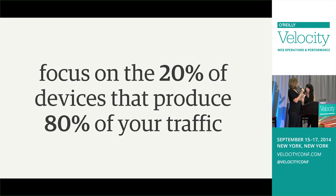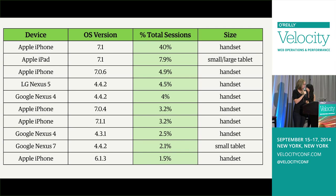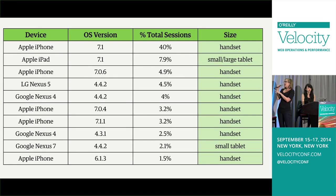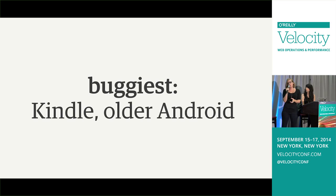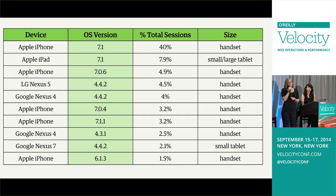We really want to focus on the 20% of devices that produce the 80% of your traffic. The top 10 devices listed here make up 74% of total visits to my site — a great starting list. Next, cover your visitors' screen sizes and operating systems. This is also an opportunity to identify particularly buggy devices — Kindles can be problematic, as can really old versions of Android. In my list, nearly all iOS devices are running iOS 7 and the others are running recent versions of Android, so I don't have to worry as much about Kindles and older Androids.